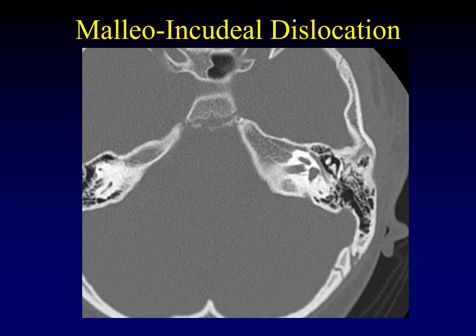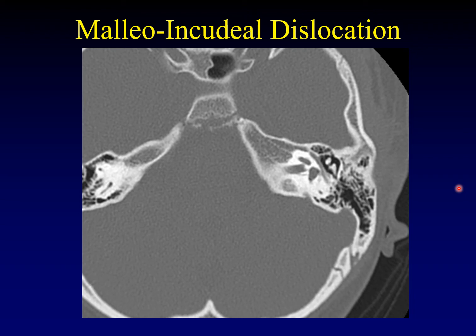Remember that when dealing with longitudinal fractures running through the middle ear, the ossicles are at risk. Find the ice cream cone — the normal malleoincudal relationship — and make sure the ice cream is on the cone. Here's an example where the ice cream has fallen off: the head of the malleus has fallen off the body of the incus. There should be just a barely perceptible line of medium gray between these two bones. Seeing air between them is absolutely abnormal — this is malleoincudal dislocation. Incudostapedial dislocation can also occur, but malleoincudal dislocation is far more common.